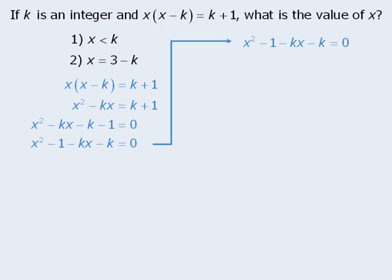At this point, let's see what happens if we try factoring the left-hand side in groups. So first we can factor x-squared minus 1 as x minus 1 times x plus 1. And next we can factor negative kx minus k as negative k times x plus 1.